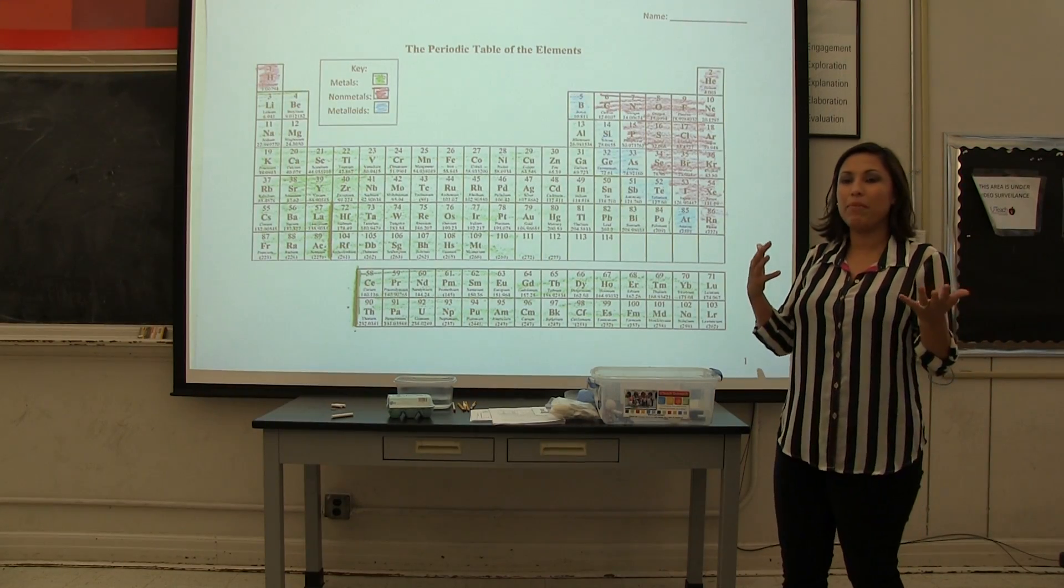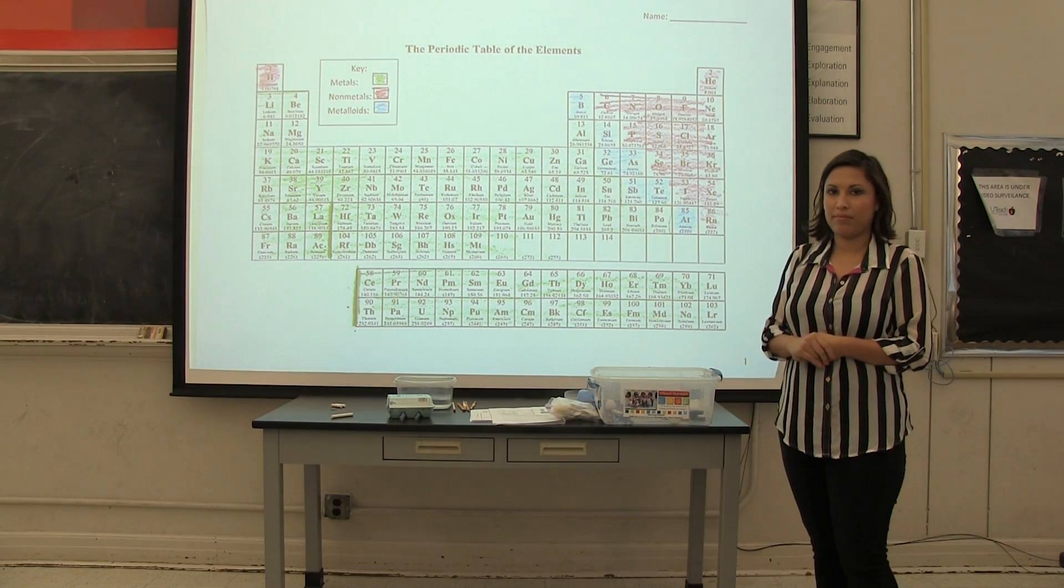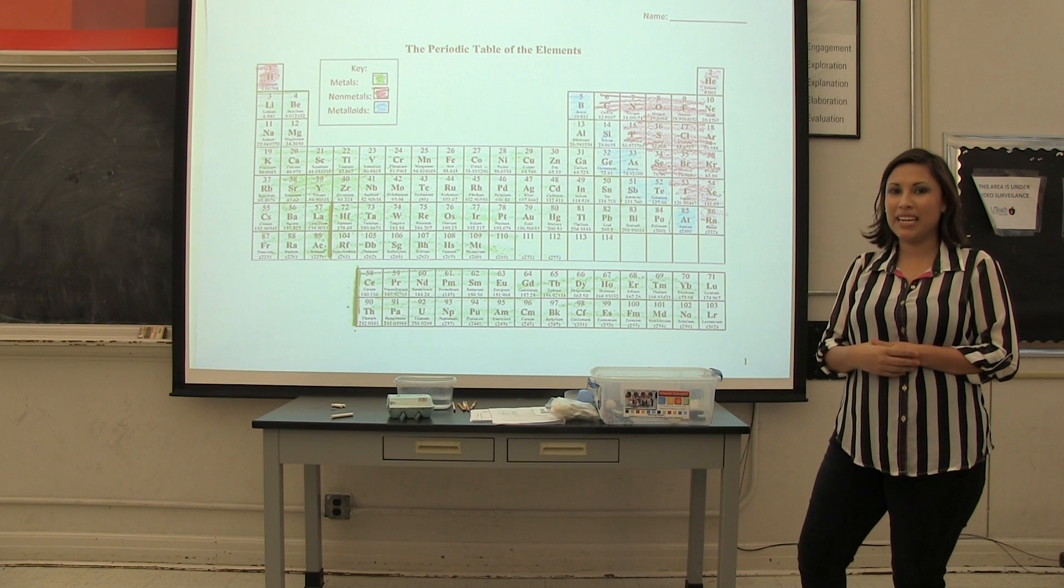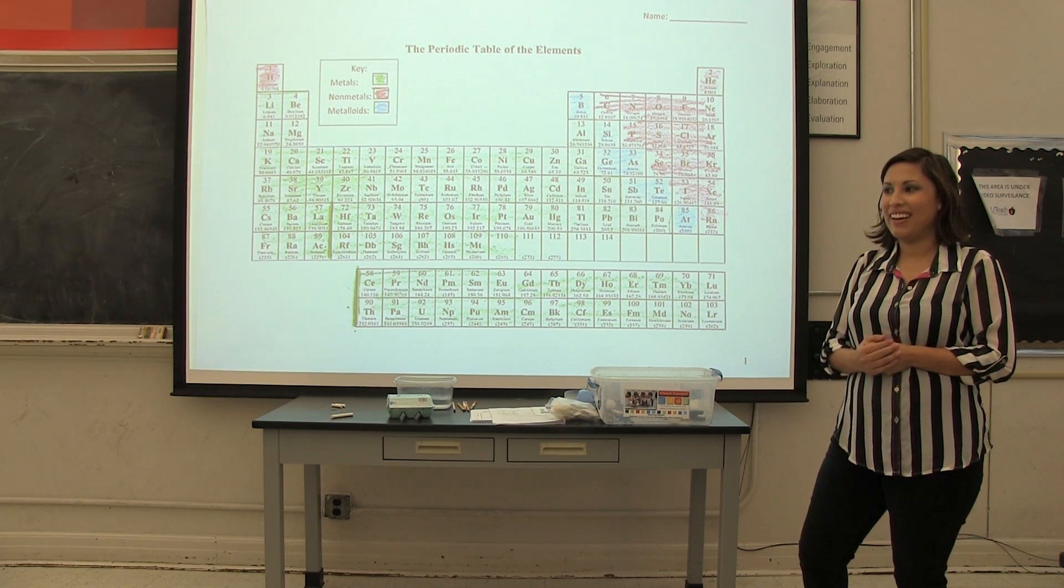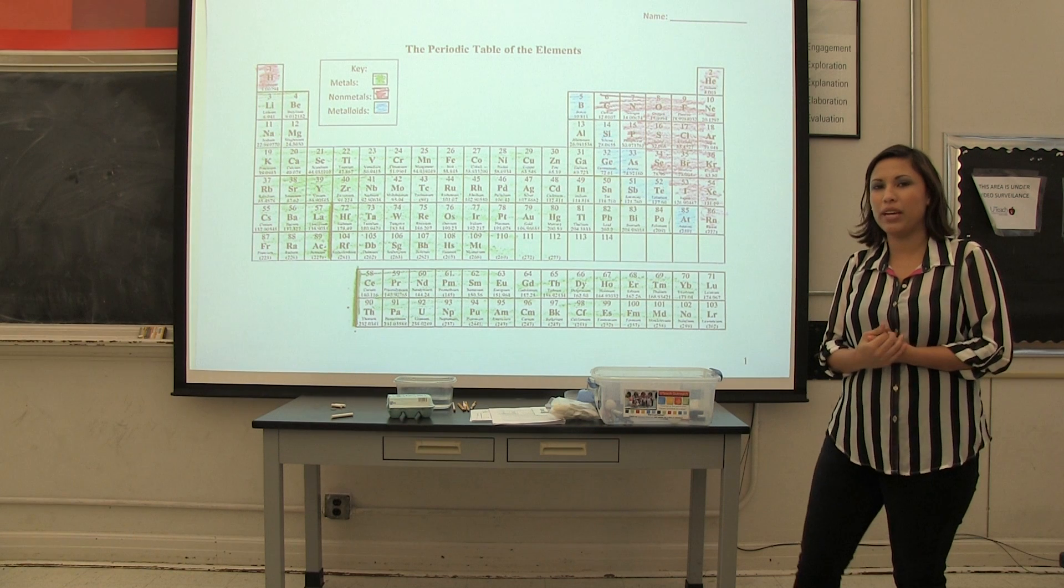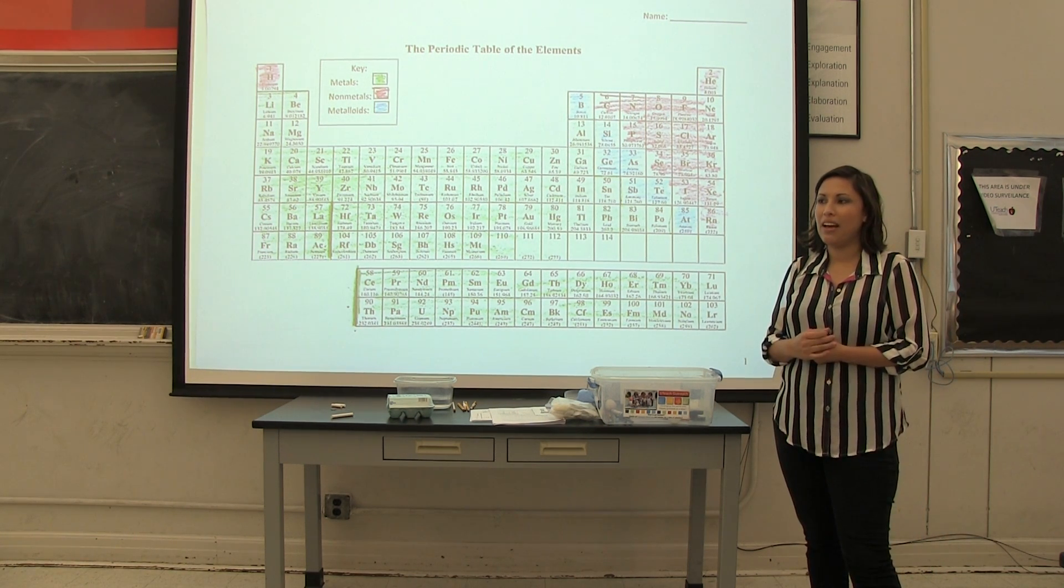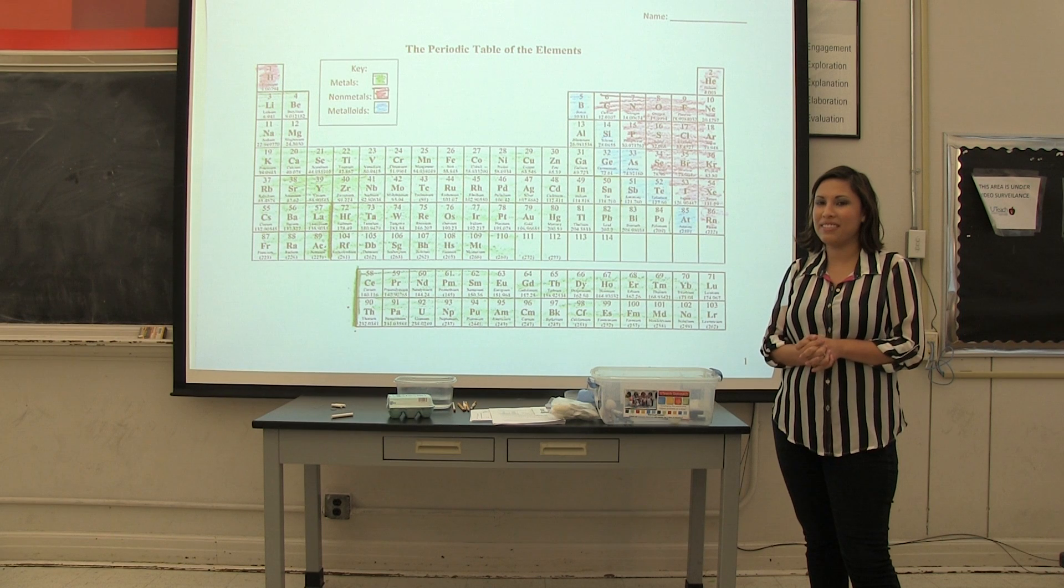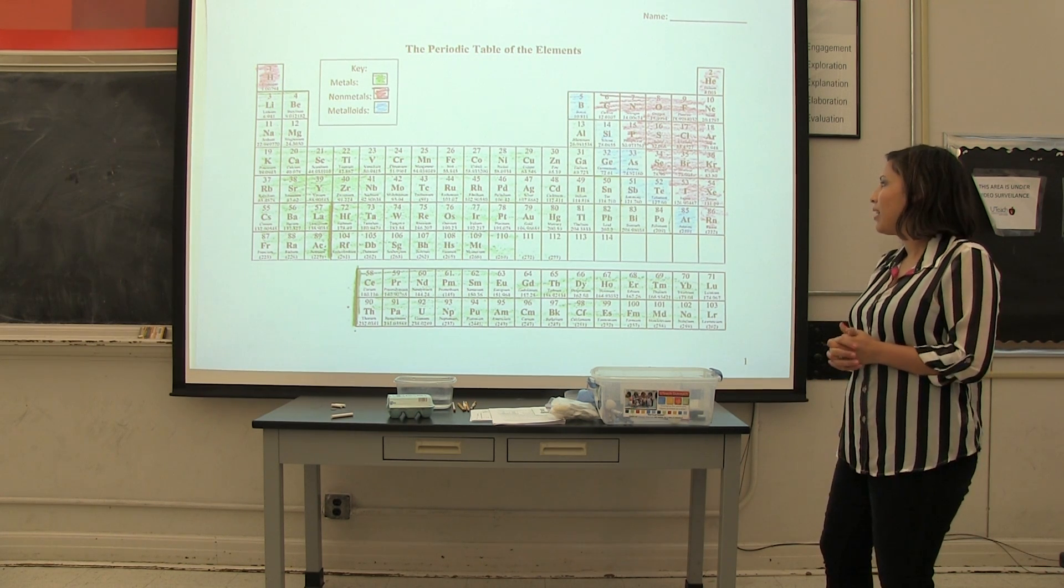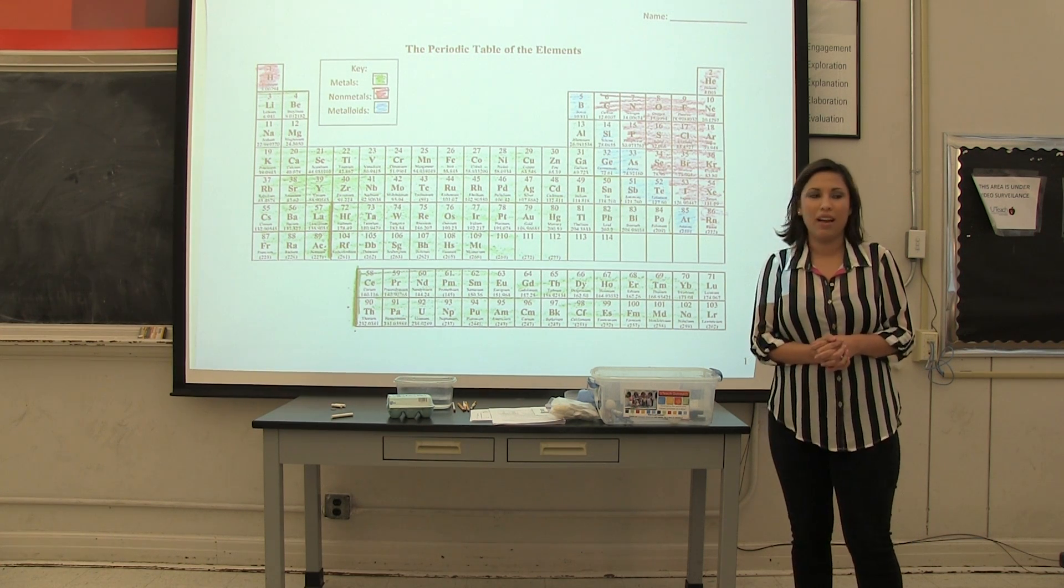All right, so what types of metals did you experiment with today? Zinc. I'm sorry, what was that? Zinc. Zinc? Copper. Very good. So did you experiment and test any metalloids? Yes. Which ones? Okay. Any others? No. And what about the non-metals? Sulfur and carbon. All right.